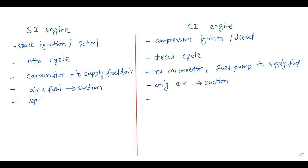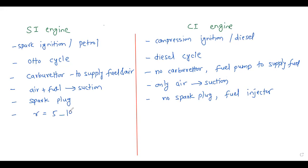In the SI engine you have a spark plug; in the CI engine there is no spark plug — instead you have a fuel injector. Regarding compression ratio: in the SI engine it is 5 to 10, while in the CI engine it is 15 to 20. The CI engine has a higher compression ratio because you need to increase the temperature to reach the self-ignition temperature of the fuel.